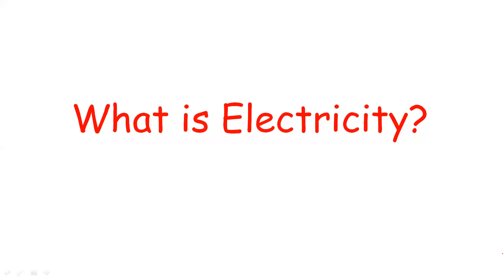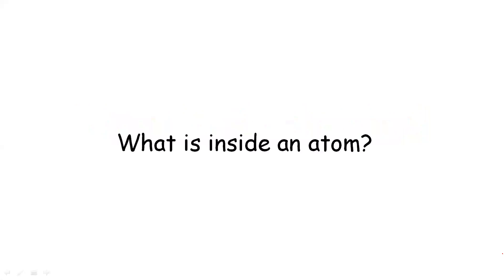How do we have positive and negative charges? To understand this, we are going to use a little chemistry. We are going to talk about atoms. There are two different types of atoms.